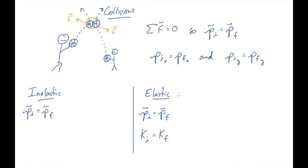So let's turn our attention now to the other kind — inelastic collisions. This is a collision where, as with all collisions, we conserve momentum, but we don't conserve kinetic energy. Let me show you an example of an inelastic collision to illustrate what I'm talking about.